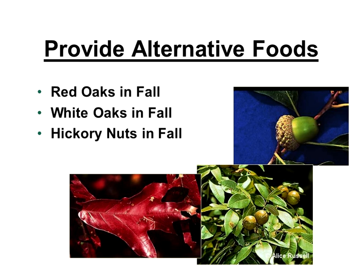Plant diversity also helps provide alternative foods within and across seasons. For example, you might be trying to attract gray squirrels and have red oaks in your yard — red oak acorns take two years to mature. If it's a bad production year for red oaks but a good year for white oak acorns, which mature in one year, the white oak becomes an alternative food source. If no acorns are available, hickory nuts might be that buffer food. We're not able to provide these alternative foods unless we have really diverse plant communities.